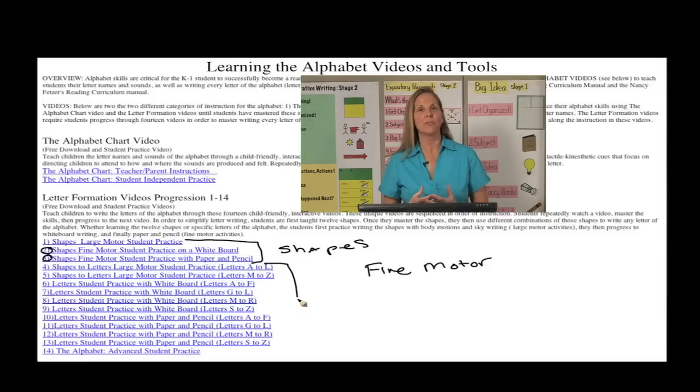Once students know all 12 shapes, then we move to videos 4 through 13. Again, you will learn these in a progression. The first of those two, video 4 and 5, will go back to body write, where the children will write every letter of the alphabet using those 12 shapes with their body, body write, sky write, and palm writing.